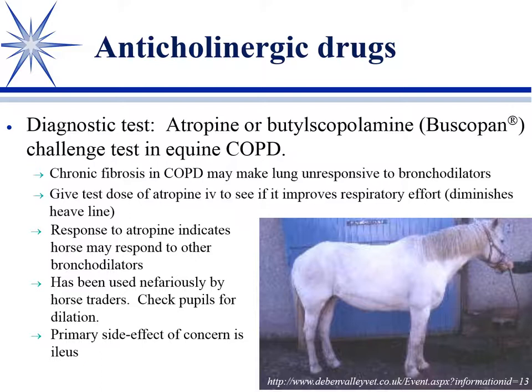The primary side effect of atropine is ileus - horses are really prone to it - so that's the one drawback. That's why I got to thinking about buscopan as a possibility, because it's less risky in horses in terms of ileus.